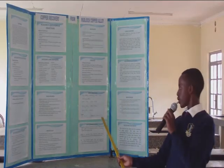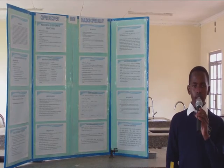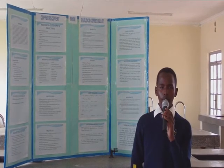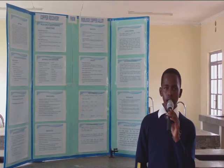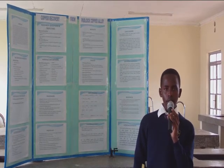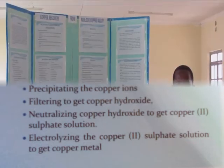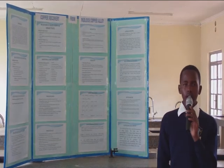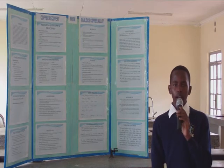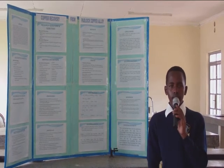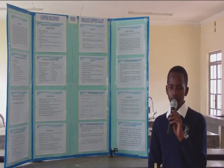Chapter 4, Discussion of the Results. According to research done in 2011, copper was recovered from waste waters and waste solids through chemical processes. My project was also successful; the metals identified in the scrap copper alloy were copper and zinc. According to the second objective, copper was recovered from the scrap copper alloy by oxidation, precipitation, filtration, neutralization, and finally electrolysis.